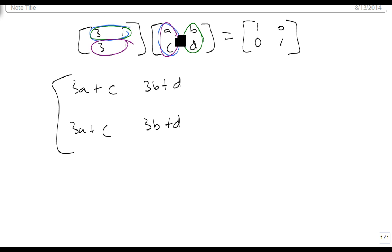So our third one is this times this, and then this times this. And that's got to equal 1, 0, 0, 1. So here we go.